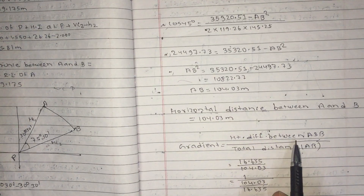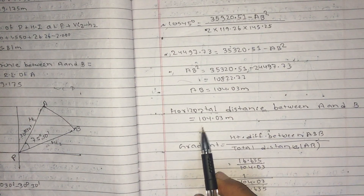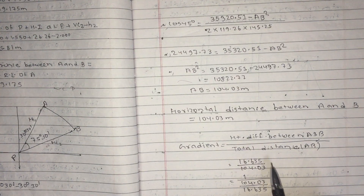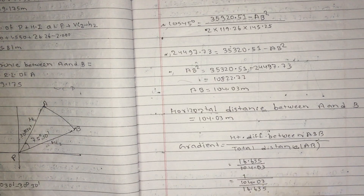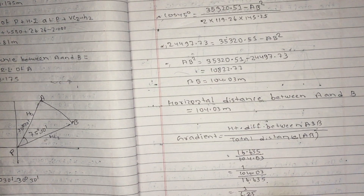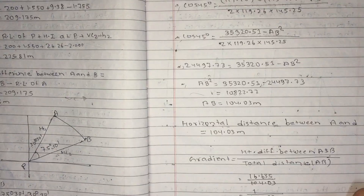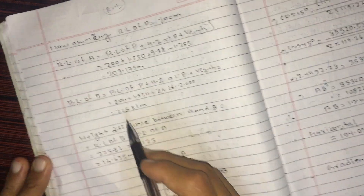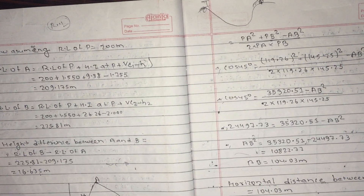For the gradient formula: the height difference between A and B is 16.635, and the total distance is 0.03 meters. Dividing 16.635 by 6.25 gives the gradient. The answer in gradient form is 1 in 6.